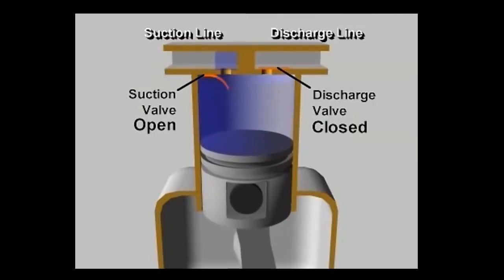The piston continues down and pulls in more vapor until the cylinder is filled with low pressure vapor at the bottom of its stroke. Once past bottom dead center, the piston begins its upward stroke. The suction valve closes.